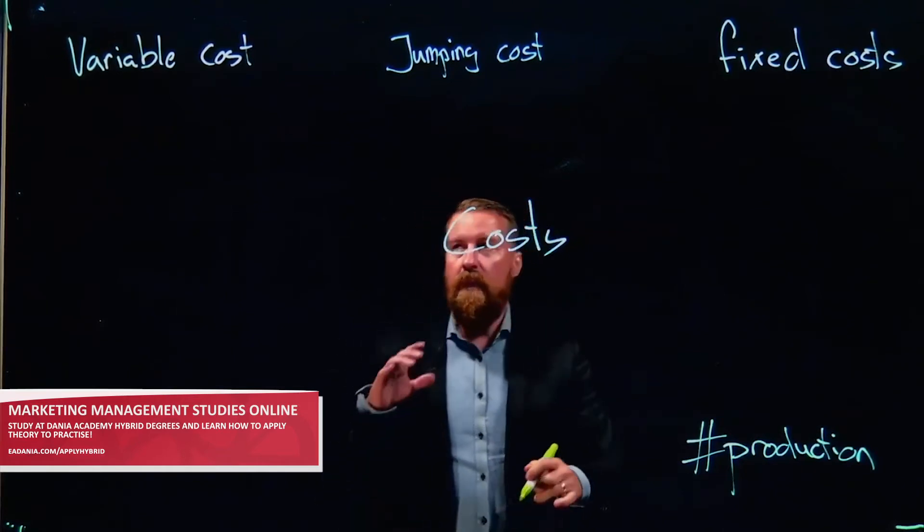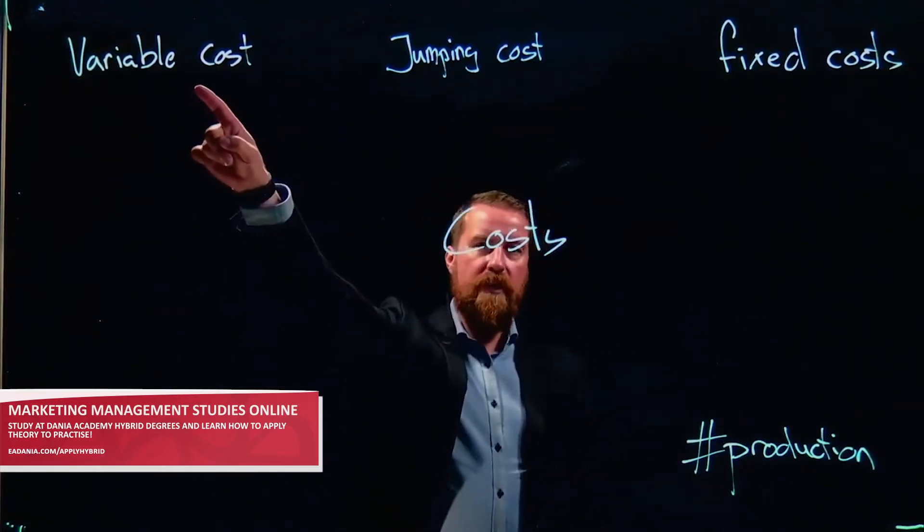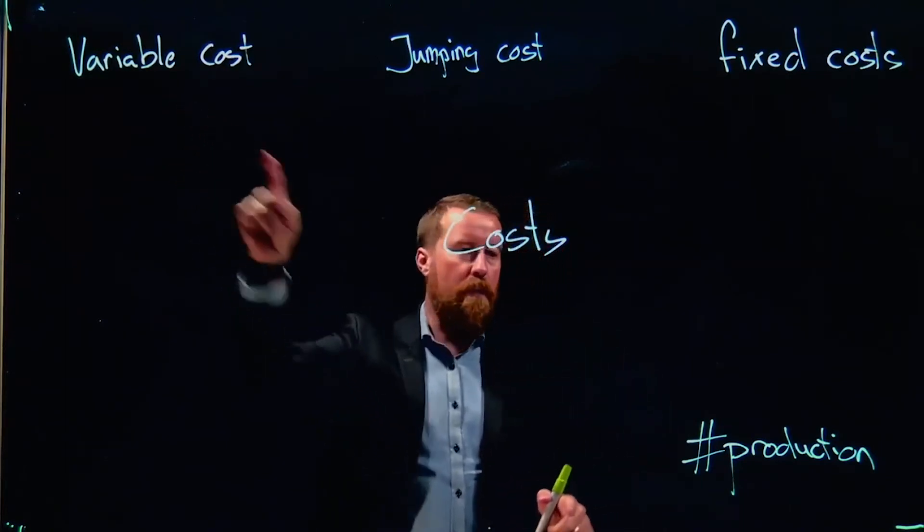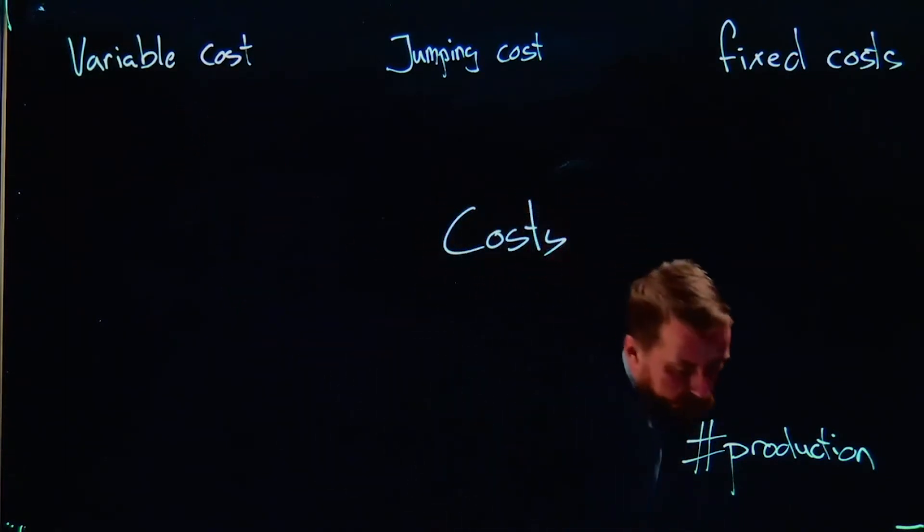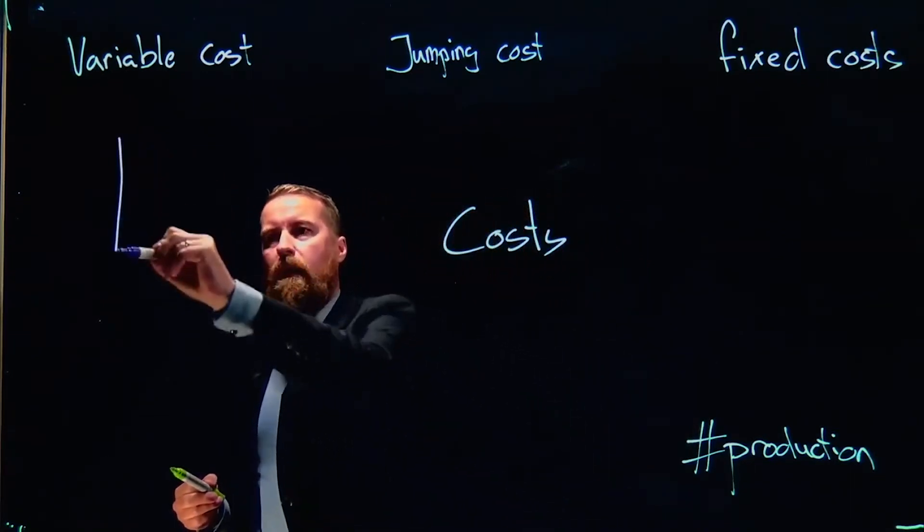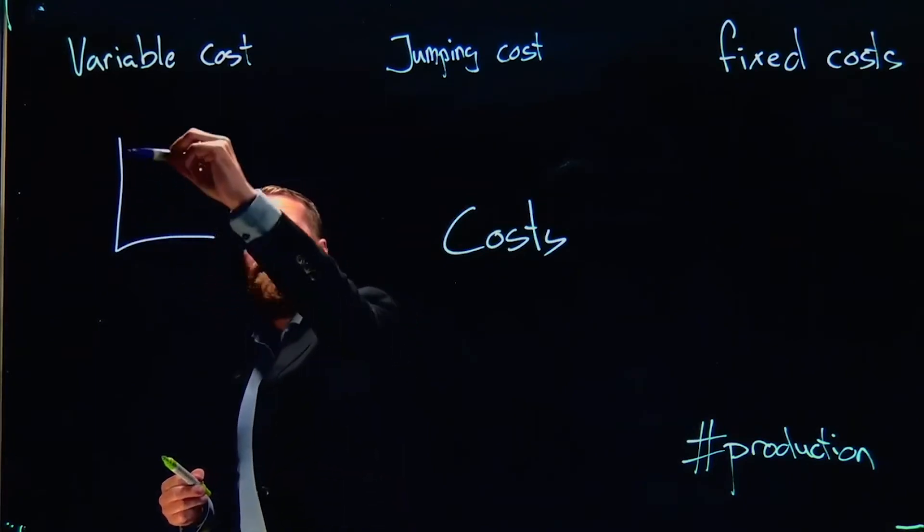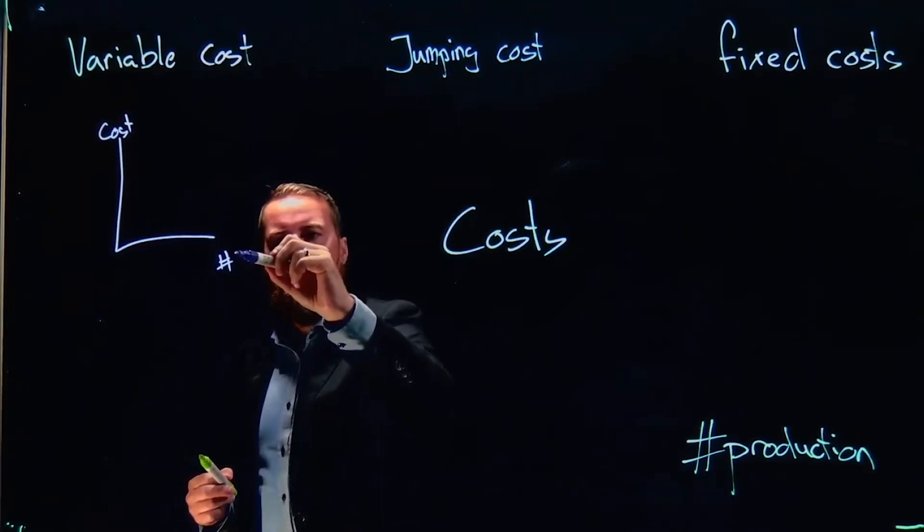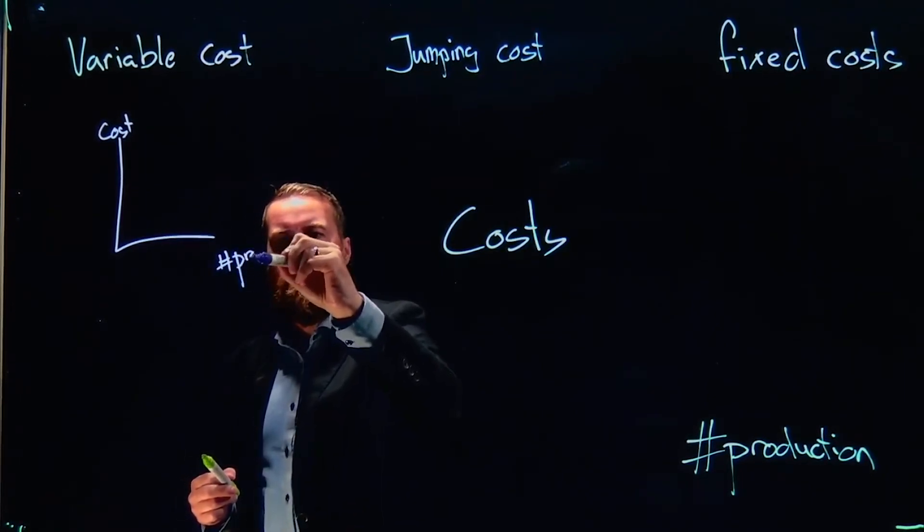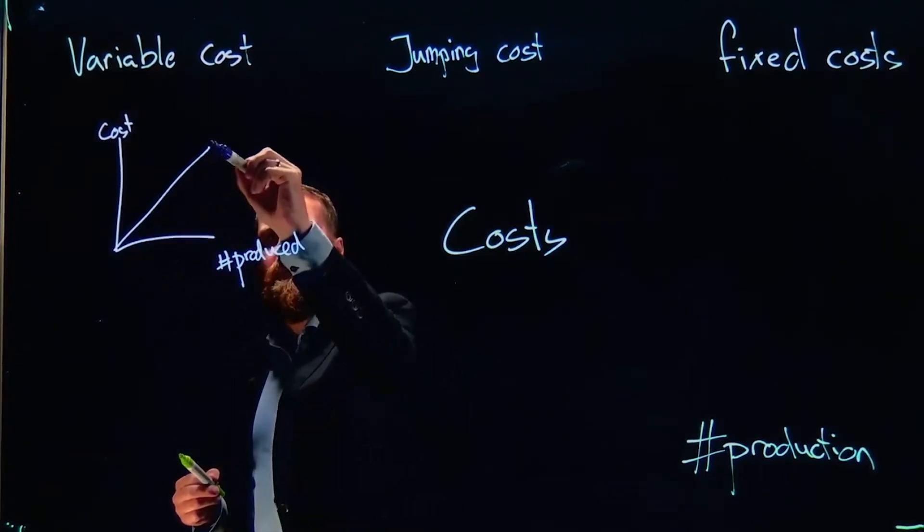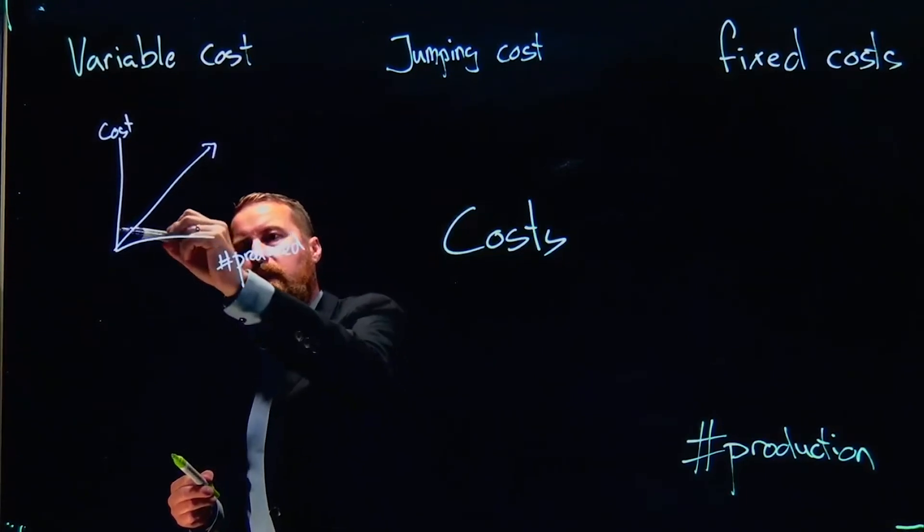So in the variable costs which we have up here, we are looking at costs which go up along with production. It would give you a curve where we have the costs and the number of units produced, and a line which goes like that.